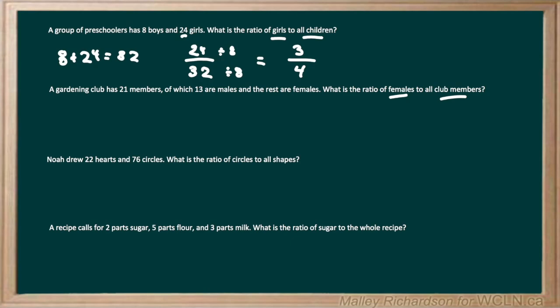To find our number of females, we're going to take our total number of the club, which is 21, and subtract the number of males, which is 13. 21 minus 13 gives us 8, so the number of females is 8. Now to write our part-to-whole ratio, we're going to have our part on top — the number of females, which is 8 — and on the denominator is our whole, the number of all club members, which is given as 21. So we have 8 over 21, and 8 over 21 cannot be reduced further, so this is our final part-to-whole ratio.